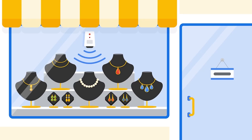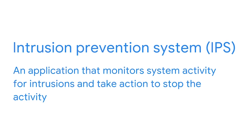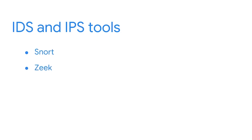Now imagine a jewelry storefront with a window sensor. When the sensor detects that the window's glass has been shattered, it triggers a steel roll-up door to automatically replace the shattered window and prevent unauthorized entry into the store. This is what an intrusion prevention system does. Intrusion prevention systems, or IPS, have all the same capabilities as an IDS, but they can also monitor system activity for intrusions and take action to stop it. Many tools perform the function of both IDS and IPS. Some popular tools are Snort, Zeek, Kismet, Sagan, and Suricata.